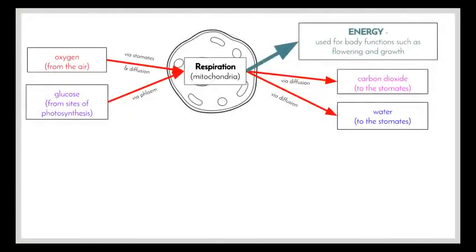We've looked at respiration and the importance of oxygen in the cells of all organisms. Oxygen and glucose come together in the mitochondria to create energy used for growth — in plants, for flowering and general growth. The two byproducts that need to be removed are carbon dioxide, which the plant gets rid of through the stomates (the small openings on the surface of the leaves), and also excess water. Just like us, plants need to get rid of carbon dioxide to prevent their cells becoming too acidic, and too much water can also cause damage.